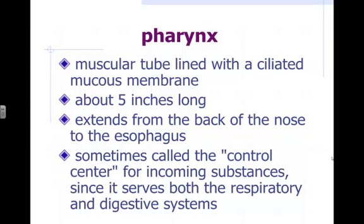The pharynx is also lined with ciliated mucous membrane, so it's doing the same filtering work there. It is sometimes referred to as the control center for incoming substances, because it is part of both the respiratory and digestive systems — controlling what you drink, eat, swallow, and breathe, and trying to get each substance to go down the right pathway.